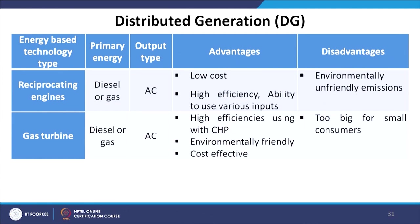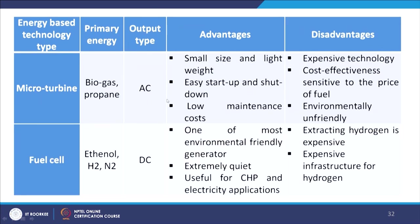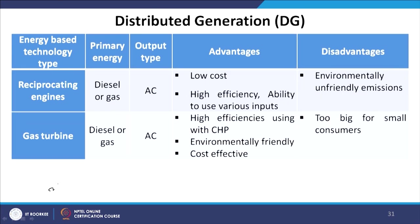For example, the first one is reciprocating engines — diesel or gas as the primary energy — with an AC output type. The major merits of this reciprocating engine are low cost, high efficiency, and ability to use various inputs. But the main disadvantage is that it is environmentally unfriendly because of emissions.